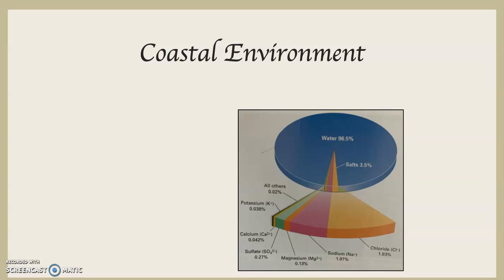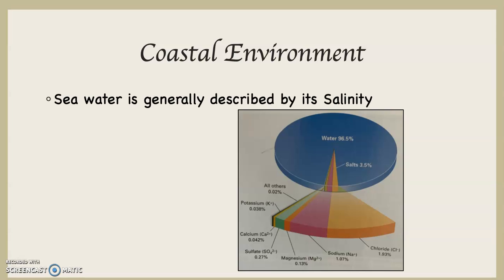The coastal environment for our purposes is going to start with the global ocean. Seawater, which is what the ocean is, can be described in a variety of ways, but it's generally described based on its salinity. If you take a look at this diagram on the right-hand side, you can see that water accounts for about 96 and a half percent of the global ocean.